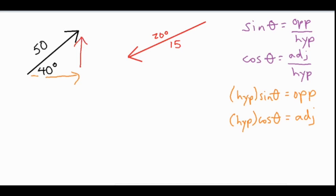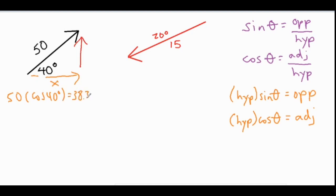If you want the x component, very likely you're going to use cosine. Cosine involves the adjacent and the hypotenuse side. We have 40 degrees, so the x component is going to be our adjacent side. If we do a little bit of algebra and multiply both sides by the hypotenuse, the adjacent side equals the hypotenuse times the cosine of the angle. So we take 50 times the cosine of 40 degrees, which gives us 38.30.